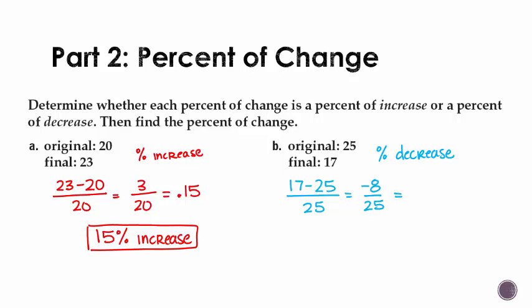When you plug that into your calculator, you'll get a negative number out. You can express your answer as negative 0.32, so negative 32%, or you could say it's a 32% decrease.